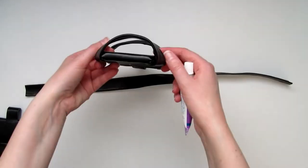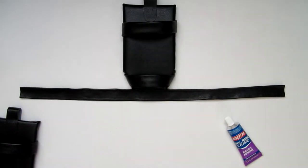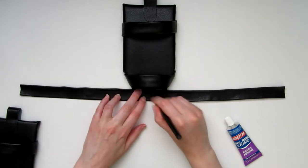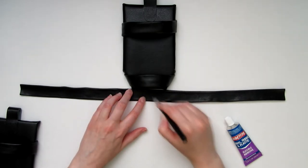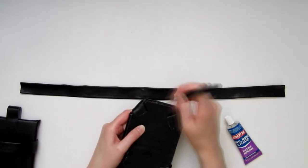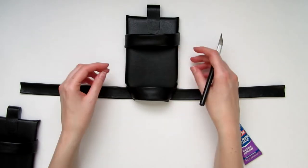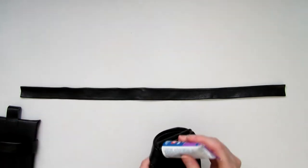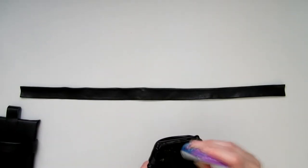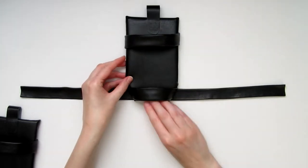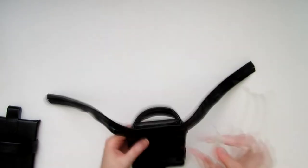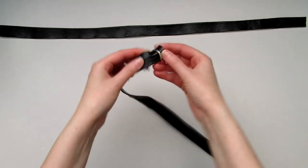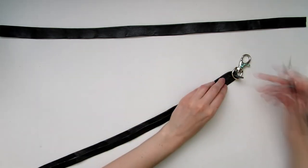Then glue the bases to the center of the thigh straps. Next, take your hip straps and attach a lobster clasp to each end, so this will be four clasps in total.